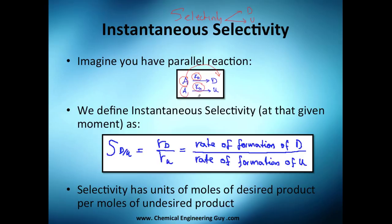But at the same time, A may take this second path which is the undesired product U. We must define the instantaneous selectivity - I say instantaneous because it's talking about rates of reaction at that moment. The derivative, remember, rate is how many moles of D are changing with respect to volume and time.